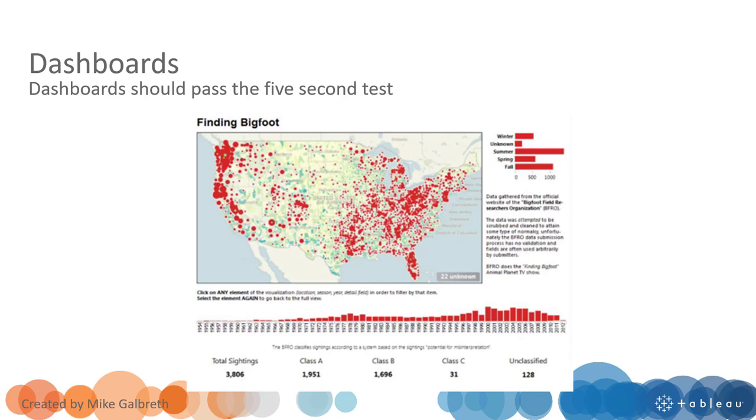You may consider combining multiple visualizations together to create a dashboard. A dashboard is a visualization that normally contains multiple single visualizations—single charts. For example, here we have a map, a bar chart, and another bar chart. All those charts together can create a better story, so try to combine multiple visualizations together to create a dashboard.